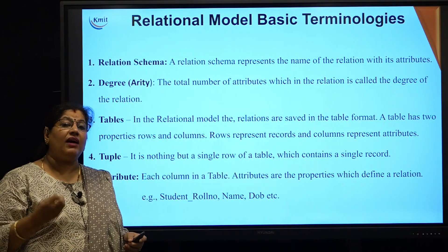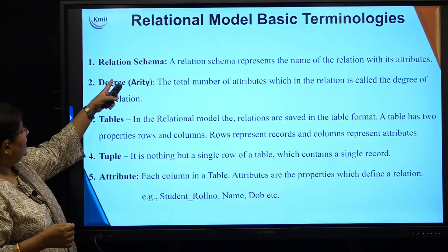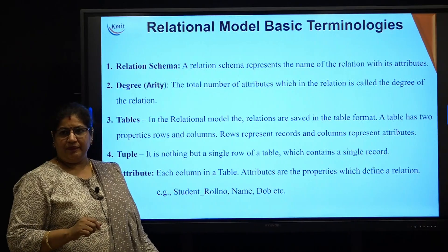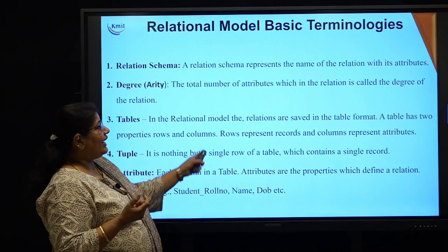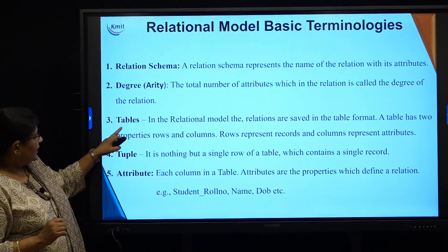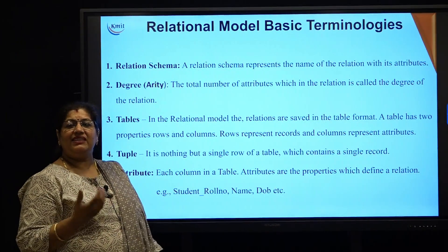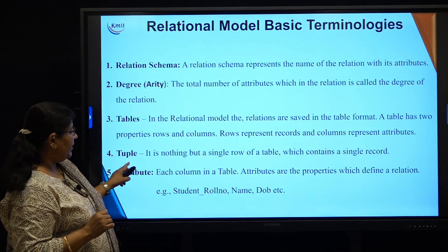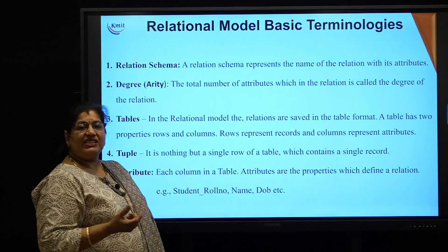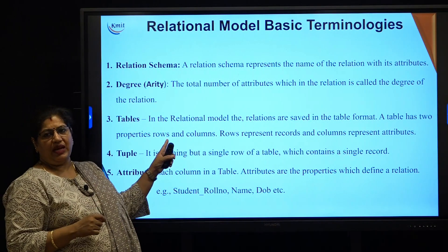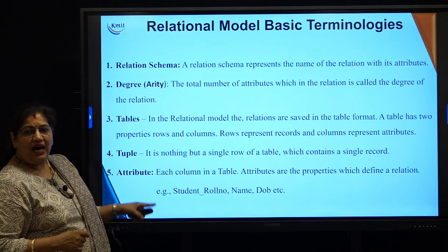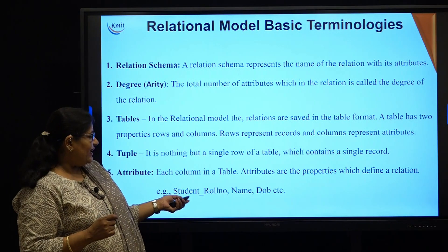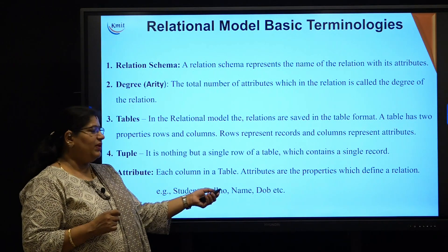Let us understand some basic terminologies used in RDBMS. Relation schema represents the structure, which is the name of the relation with its attributes. The degree is the total number of attributes in the relation. Tables are the relations themselves, containing data organized in rows and columns as per the structure defined in the relation schema. A tuple is a single row of the table, containing a single record of one instance of that relation. Attributes are the columns of the table — for example, in a student relation it can be roll number, name, date of birth, etc.